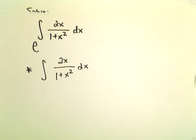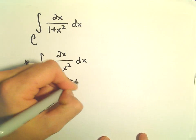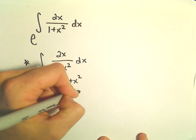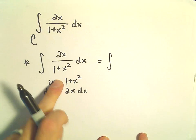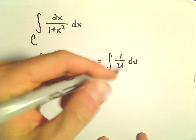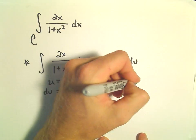And to integrate this I think we can just do a nice little u substitution. We can let u equal 1 plus x squared. du is going to give us 2x dx. So after we do our u substitution, we're really just integrating 1 over u du. And that's going to give us the natural logarithm of u plus c.